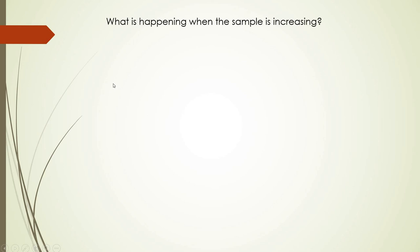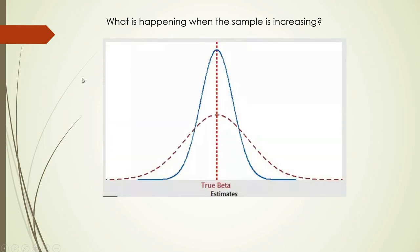What happens as the sample increases? With a smaller sample, the variation will be larger — this is the red curve. As our sample grows in size, the variation of our distribution of beta 0 and beta 1 hat will become narrower and narrower. We will be much closer to the true value of beta in the population. So it is advisable to have large samples in order to reduce the variation of the distribution of your estimates.